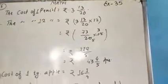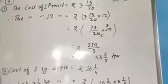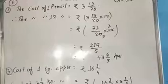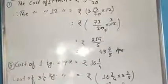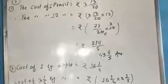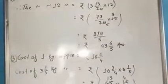After that we divide where possible and finally put the value we get. The value here is 219 by 5. We change this to mixed fraction form: 43 whole 4 by 5.